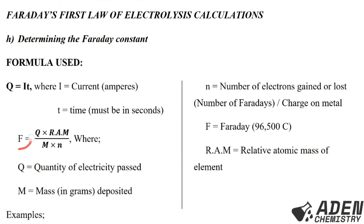The formula for calculating Faraday's constant (F) is: F = (Q × RAM) / (M × N), where Q is quantity of electricity (Q = IT, T in seconds), M is mass in grams deposited, N is number of electrons gained or lost (number of Faradays or valence), and RAM is relative atomic mass of the element.